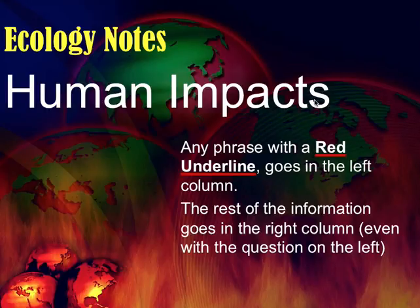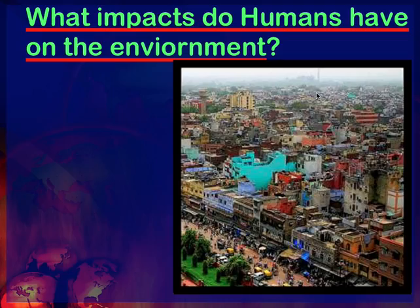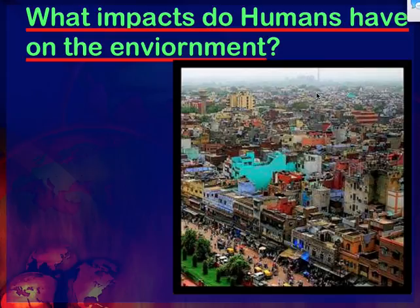No species on the planet has an impact on its environment like humans do. We can change the course of rivers, we can dam rivers, we can completely destroy ecosystems and tear them out. We can hunt species, change the numbers of their population, move them in, move them out. Sometimes we put new species into environments even when they're not supposed to be.